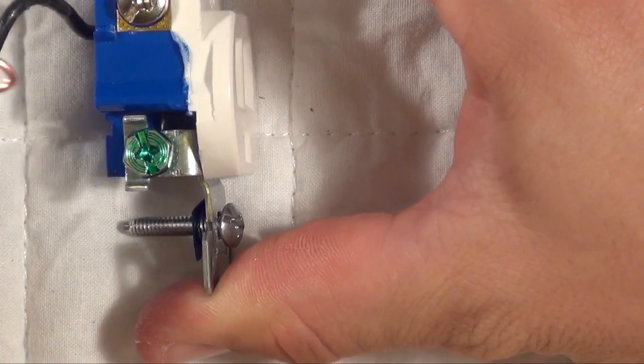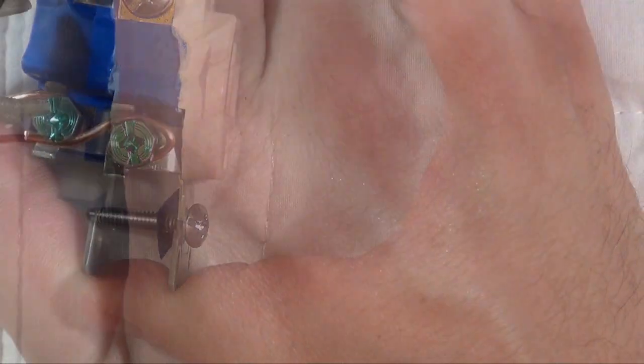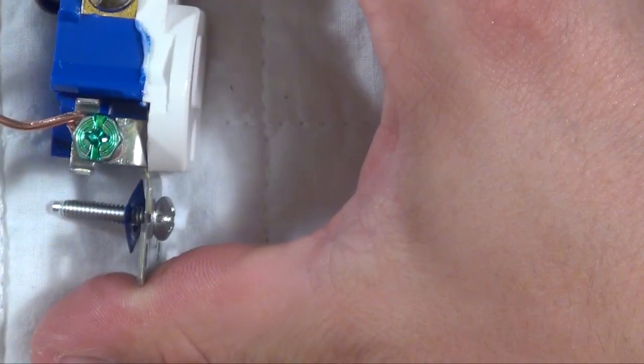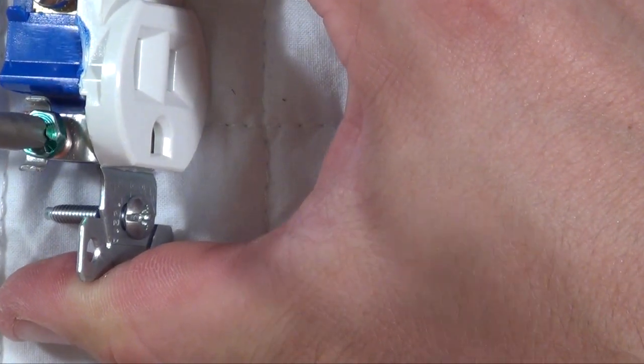And for the third time, loop around your ground wire to your green screw. Tighten down with your pliers and screw down with your screwdriver. Make sure your connection is very tight.